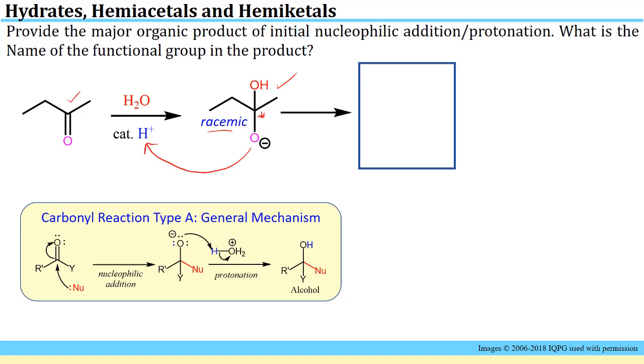Next, we have to protonate this negatively charged oxygen in this acidic media, and that's how we get the final product. This product now has two OHs here, no longer racemic because we don't have a chiral center here anymore. It was chiral here, but now you have two OH groups, and this is called a hydrate.